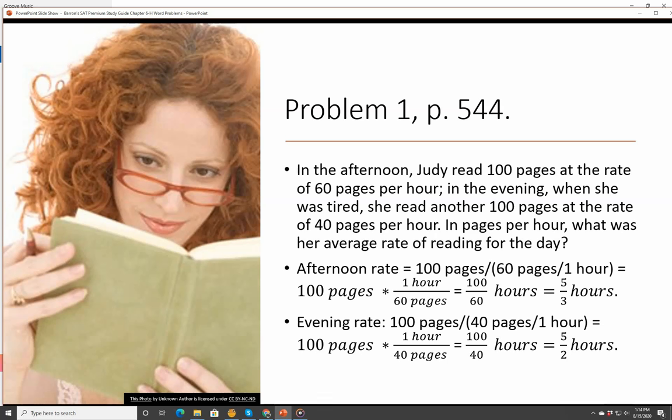In pages per hour, what was her average rate of reading for the day? We know the afternoon rate would have been 100 pages divided by 60 pages in one hour. Pages cancels out, so we get 100 over 60, which is five-thirds of an hour. Evening rate, 100 pages over 40 pages per hour, that's 100 over 40, which is 140 hours, which is five-halves of an hour.